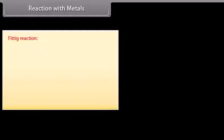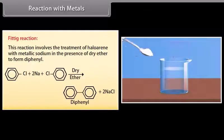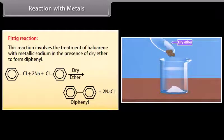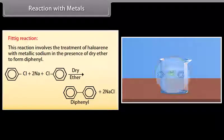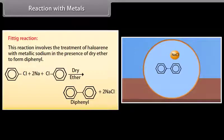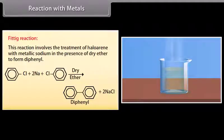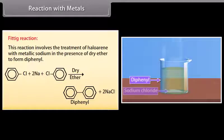Fittig reaction. This reaction involves the treatment of halo-arene with metallic sodium in the presence of dry ether to form diphenyl. Sodium is added in the chlorobenzene solution and then we add dry ether which reacts to form diphenyl and sodium chloride.